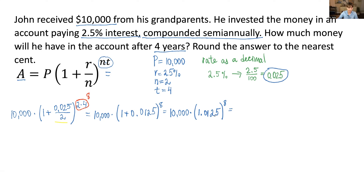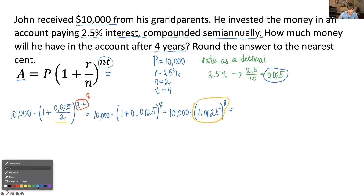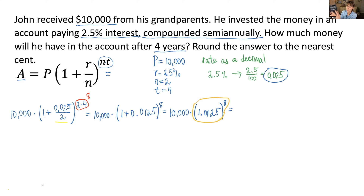What do we do next? We must take care of this exponent — we must raise 1.0125 to the power of eight. Check your scientific calculator for the caret button to raise to a power. After raising 1.0125 to the power of eight, we get approximately 1.10448610. So rewriting, we have ten thousand times 1.10448610.